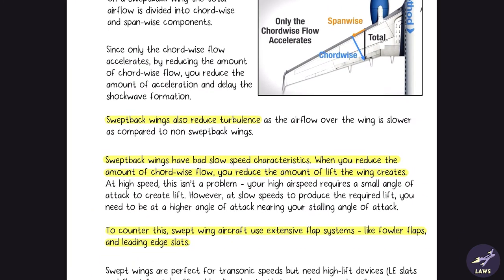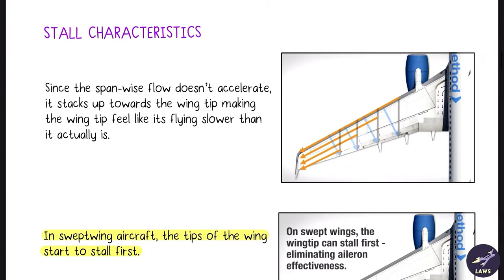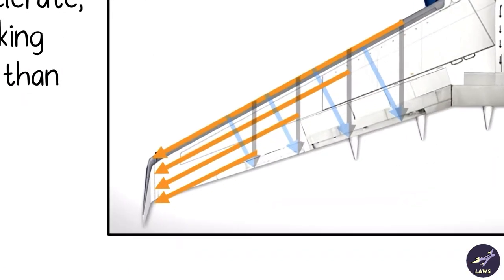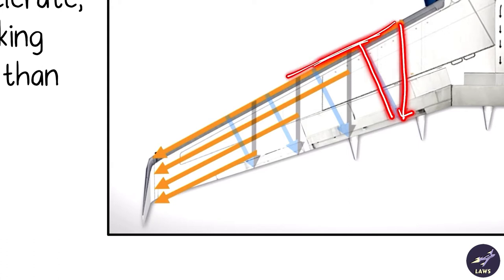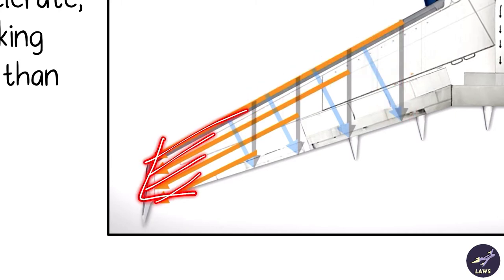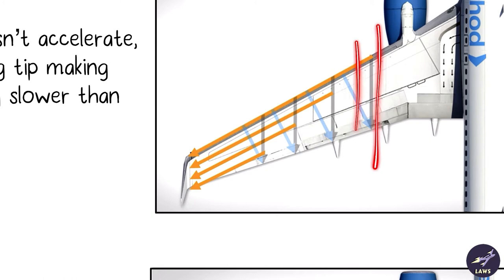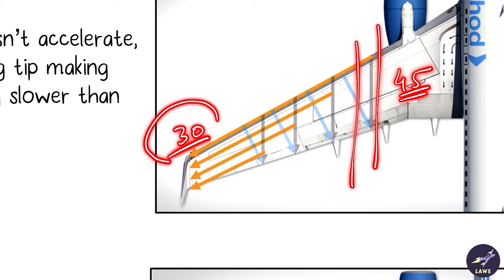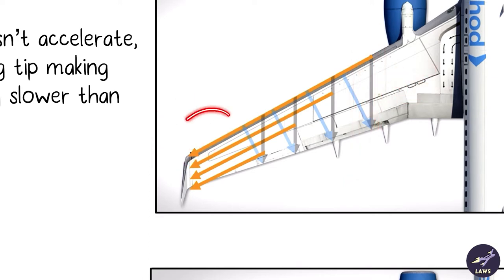Regarding stall characteristics of a swept-back wing: total flow is divided into chordwise and spanwise. The chordwise flow accelerates while the spanwise flow stacks up near the tips. Because of this stacking up, the tip feels like it is moving slower than the rest of the aircraft. For example, near the root airflow is 45 knots while near the tip it is only 30 knots — which may be the stalling speed of the aircraft.